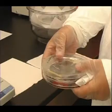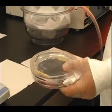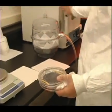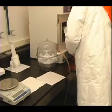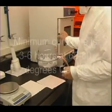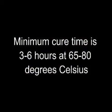Following degassing, we remove the devices from the vacuum chamber and place them in an oven at 65 to 80 degrees C. Minimum cure time at these temperatures is 3 to 6 hours. In our lab we typically leave the devices in the oven overnight.